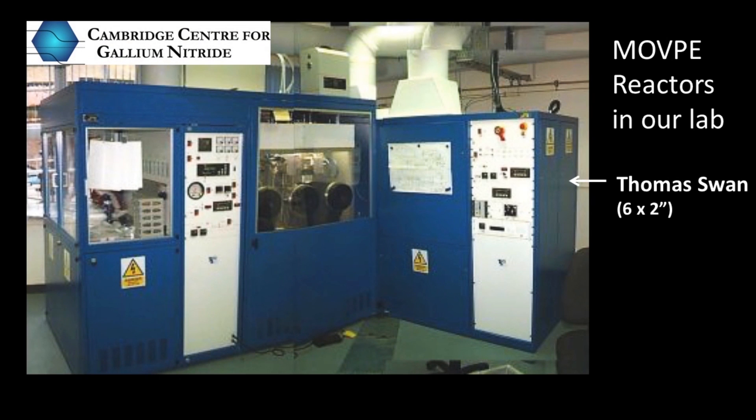In our lab, we are lucky enough to have a variety of these MOVPE reactors. This is our oldest system. It's been in the group for more than 15 years now. It allows us to grow six wafers of gallium nitride simultaneously, each of those wafers being two inches across.